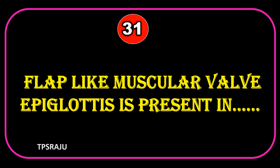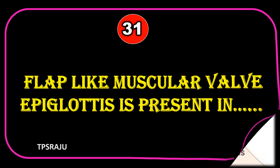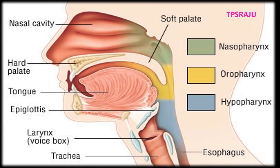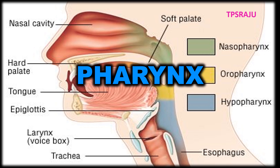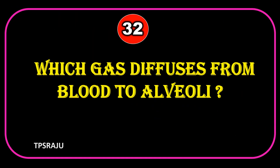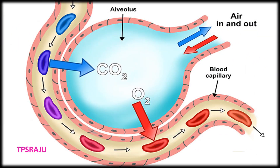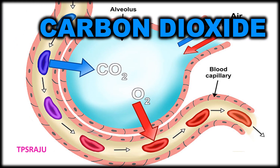The flap-like muscular valve epiglottis is present in the pharynx. Which gas diffuses from blood to alveoli? Carbon dioxide.